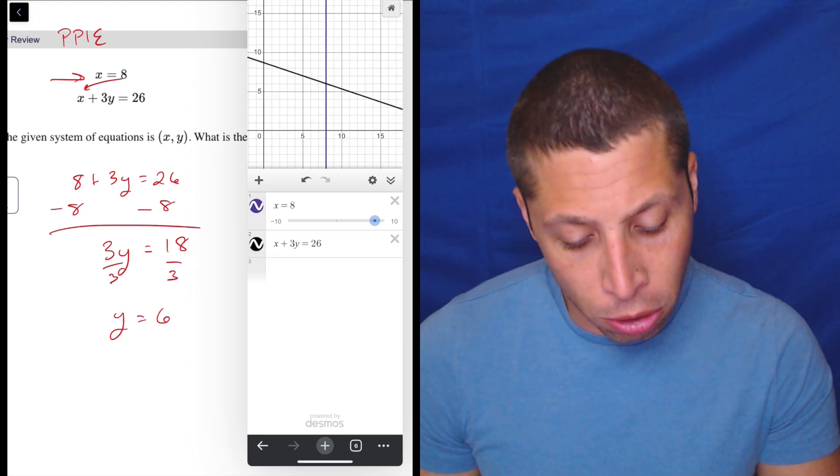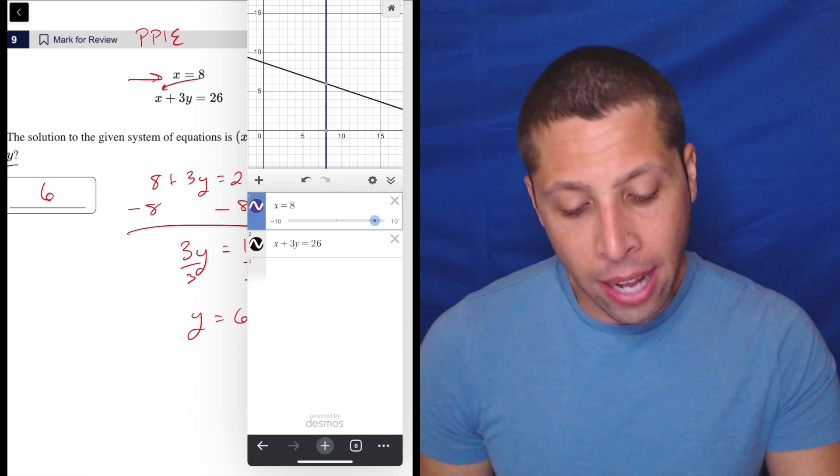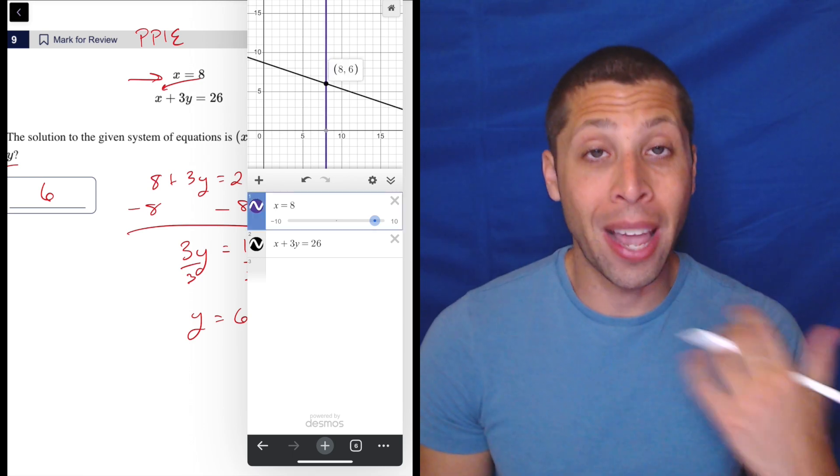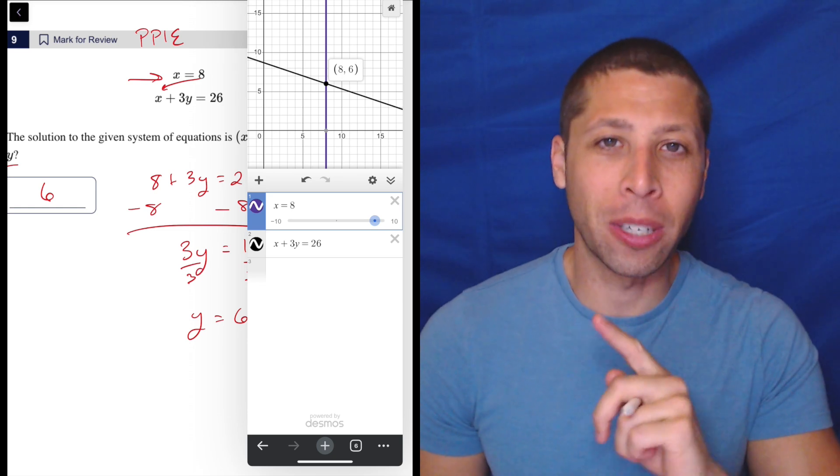You can give it anything and it'll turn it into the right equation. So I'm going to just zoom. And since we are asked for the solution, basically that is code for what is the intersection. So eight, six. But again, remember, especially if you use Desmos, that you have to make sure you are giving them the right coordinate.